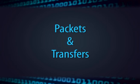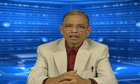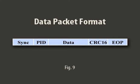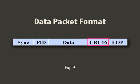Packets and transfers: USB has four different packet types. 1) Token: indicates the type of transaction that would follow. 2) Data: carries actual data. 3) Handshake: indicates acknowledgement for received data or an error. 4) Start of Frame: shows beginning of a new frame. A packet consists of different fields. For example, the data packet format shown in figure 9 contains a sync field of 8 bits, followed by an 8-bit packet identifier (PID), up to 1032 bytes of data, terminated by a 2-byte CRC error detection code and end-of-packet byte (EOP).